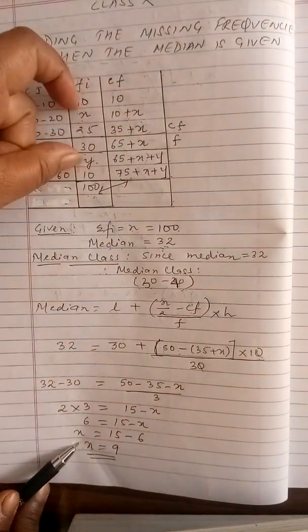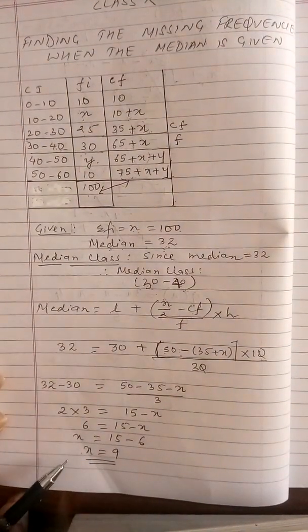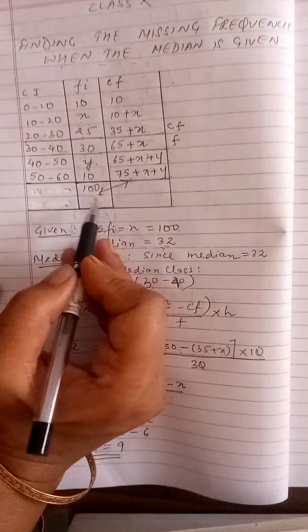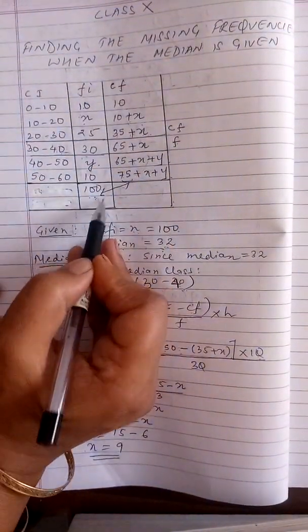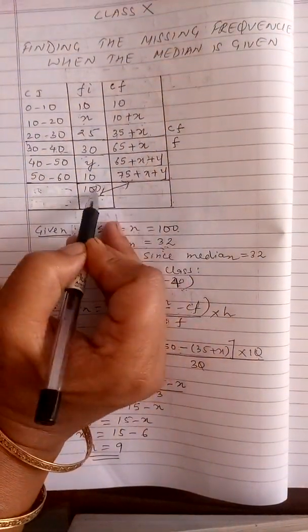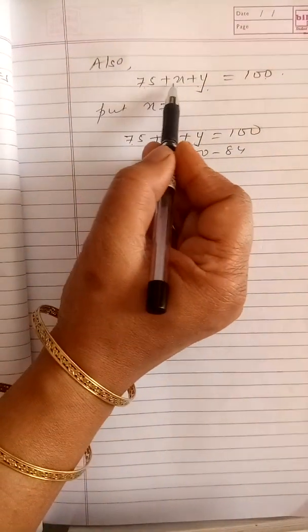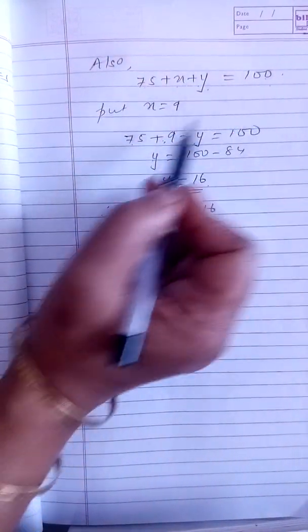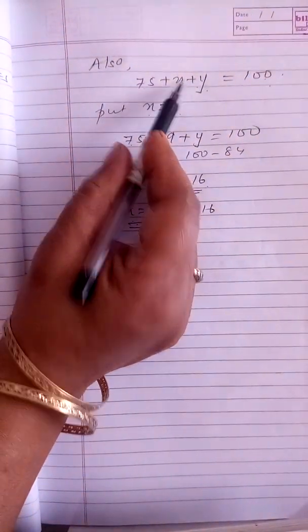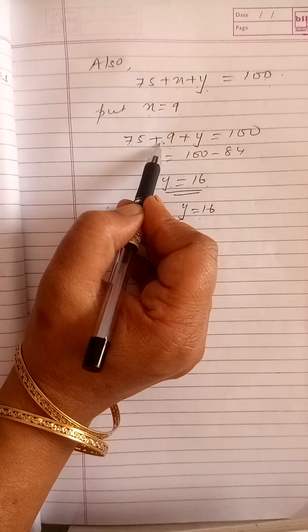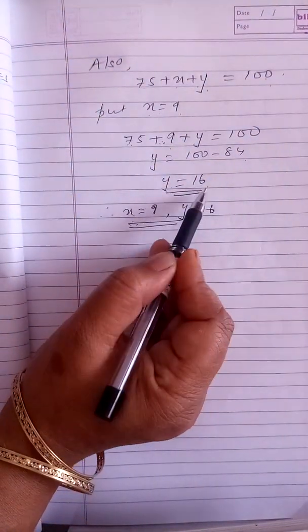Now since there are two unknowns, I have to get two equations. I have already got the value of x as 9. The total of the frequency is always equal to the last value of CF, so I equate both of them. I get 75 plus x plus y equal to 100. You have already found x as 9, so I replace x as 9 in this equation. 75 plus 9 gives me 84. So y equal to 100 minus 84, y equal to 16.